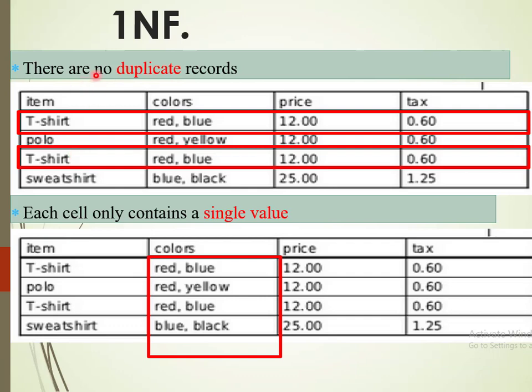The next rule is that we should not have duplicate records. If you look at this relation, you can see that the second record and the fourth record are identical. We should not have a scenario where we have identical or duplicate records, and in the event that there are duplicates, we need to get rid of them.